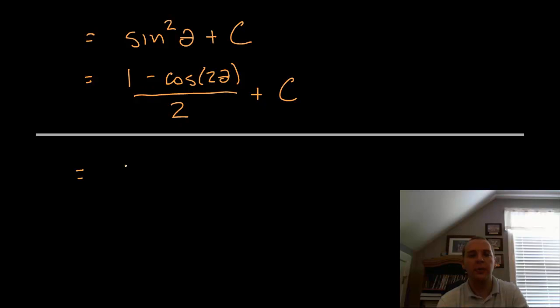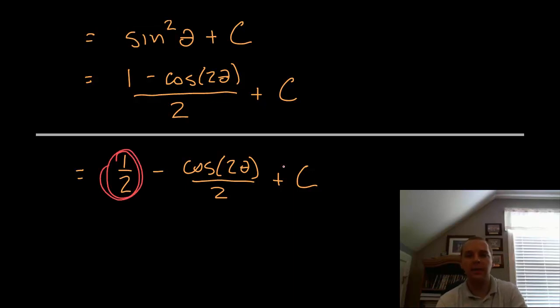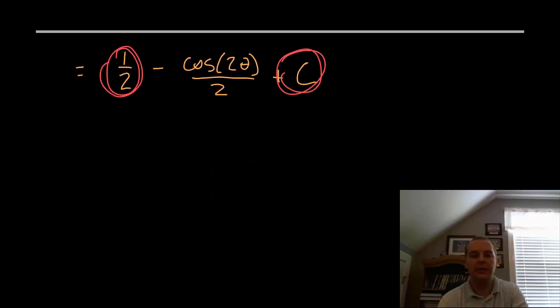Well let me clean it up just one more time for you. If you break this apart into two fractions, you'd have 1 half minus cosine 2 theta over 2 plus c. Well then look at the first term and the last term, this is a half which is a constant plus c which is a constant, so a constant plus a constant would just give you a new constant. So we can take that negative 1 half cosine 2 theta, and then absorb the first term and the last term together to be a new constant. So in actuality they are the same thing.